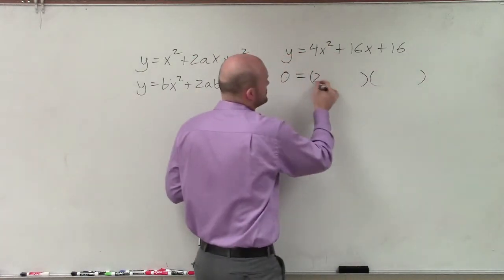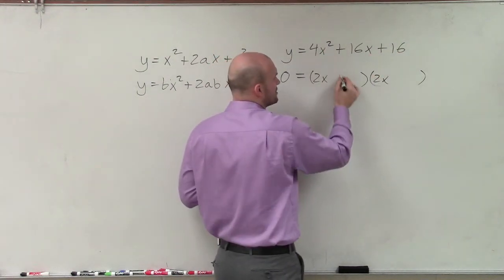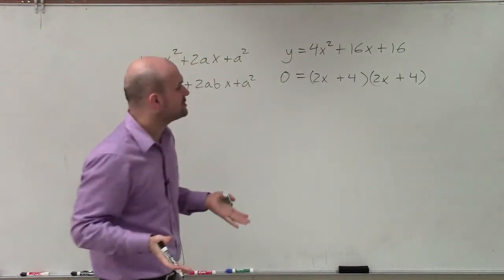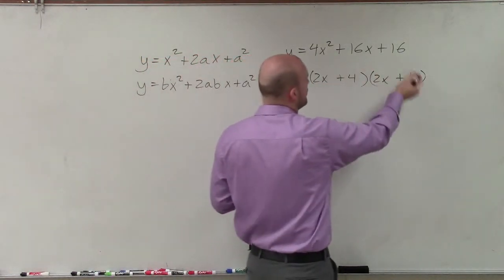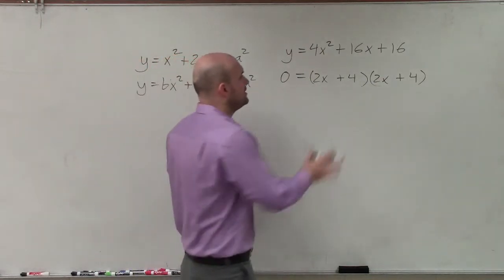I know that my first two terms have to be 2x and 2x, because 2x times 2x is 2x squared. And my other first two terms have to be 4 and 4. And again, if we just go ahead and check our work by FOIL, we can see that that's going to provide us with that binomial.